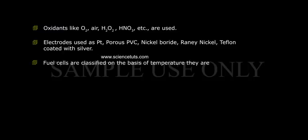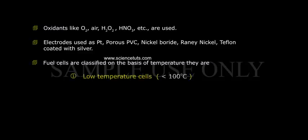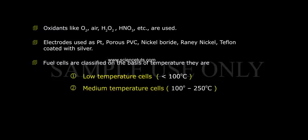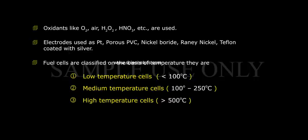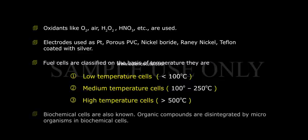Fuel cells are classified on the basis of temperature: (1) Low temperature cells — less than 100°C, (2) Medium temperature cells — 100°C to 250°C, (3) High temperature cells — more than 500°C. Biochemical cells are also known, in which organic compounds are disintegrated by microorganisms.